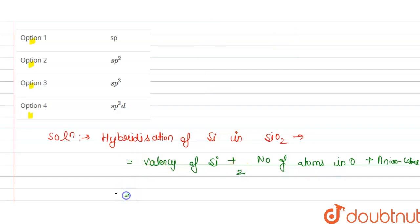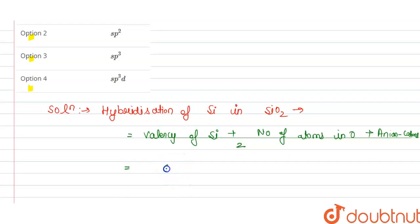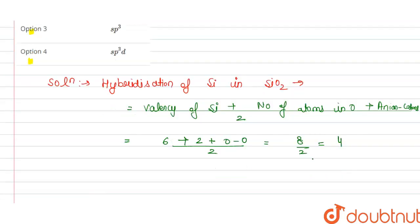So, we know that valency of silicon is 6, number of atoms of oxygen are 2, and cation and anions are 0 divided by 2. So this is 8 divided by 2, that is 4.